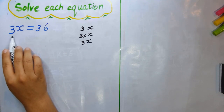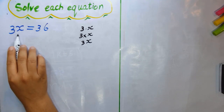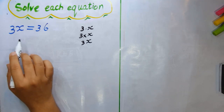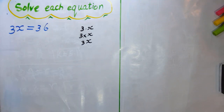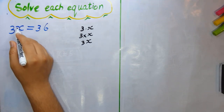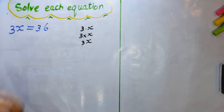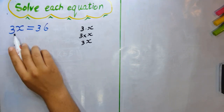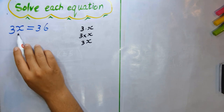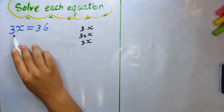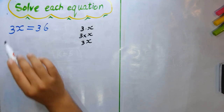We have 3 multiplied by x equals 36. To solve this equation, you should make the variable alone without any number around it. We want to make x alone, without any number next to it.